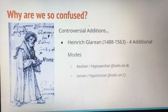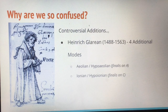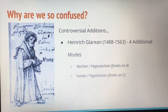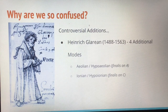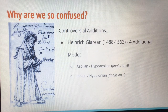To further add to the confusion, in the early 1500s, Heinrich Glareanus made four additional modes: the Aeolian and the Hypoaeolian with a finalis on A, and the Ionian and the Hypoaeolian with a finalis on C. This was very controversial at the time due to making any additions to what the church believed to be the proper forms for music. Glareanus went to great lengths to prove his new theories to the church so that he would not be in trouble with them.